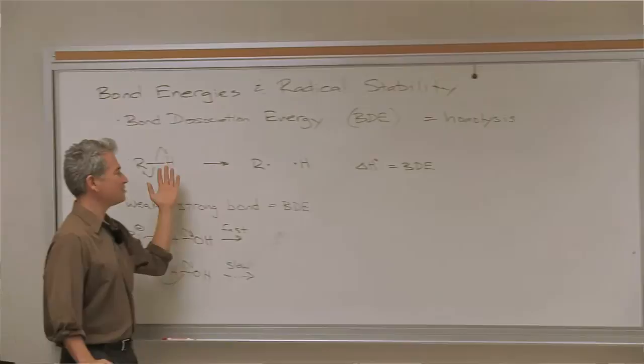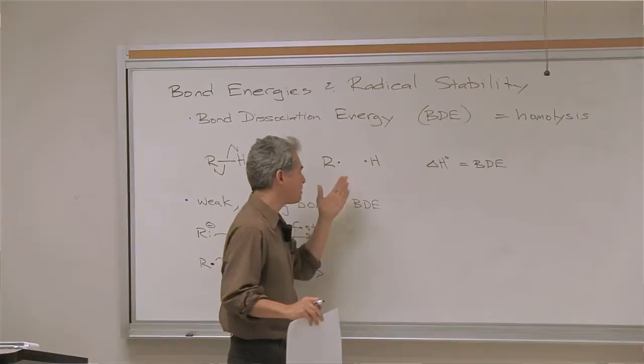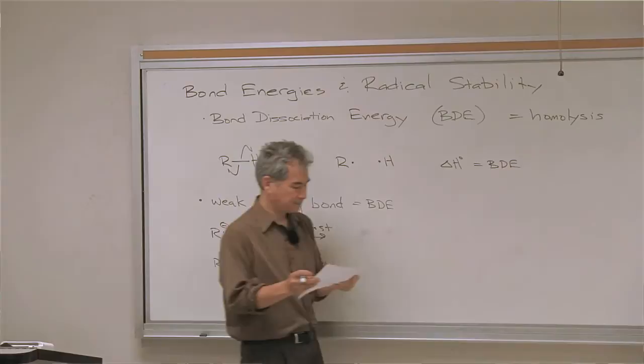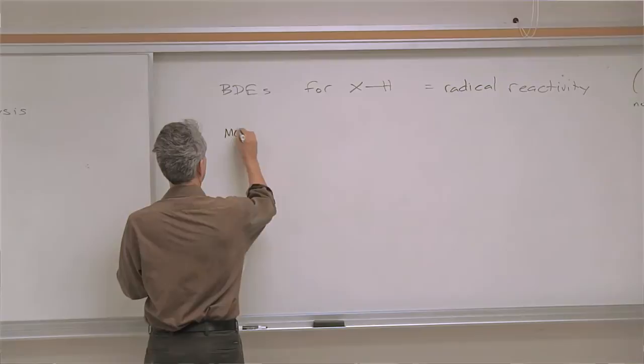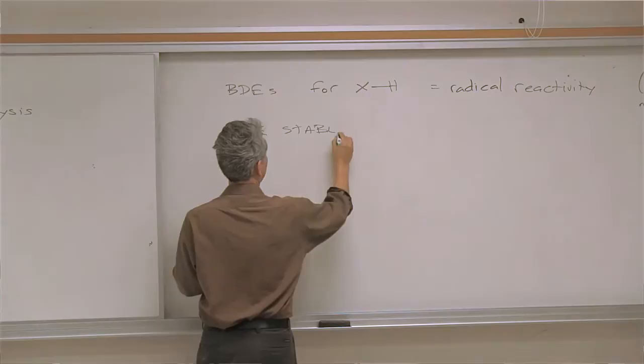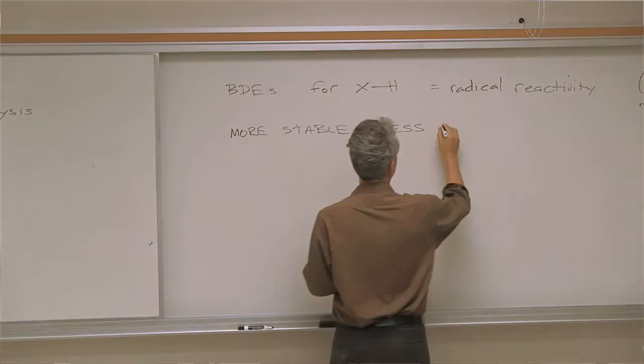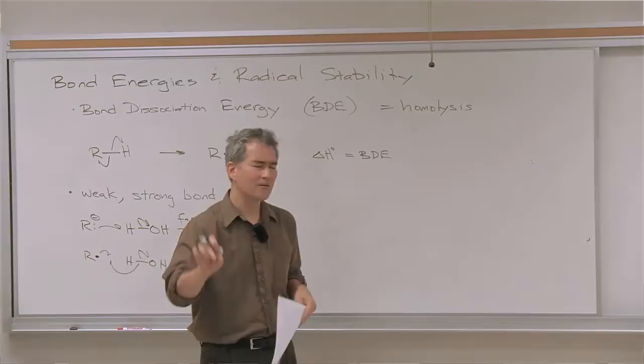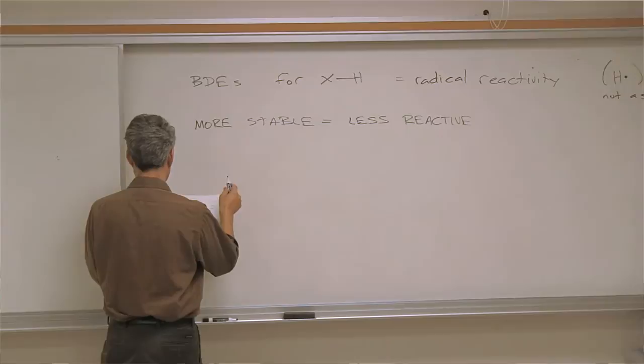By thinking about this hypothetical process, we can compare differences in bond dissociation energies — they're really telling us about differences in the stability of the X-dot radical. Let's make a general statement about the stability of radicals: more stable radicals tend to be less reactive. Most of the time that holds true in organic chemistry. For radicals, when you try to think about how reactive they are, generally more stable equals less reactive.